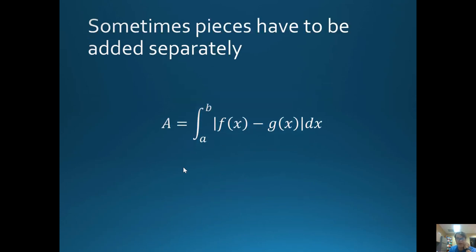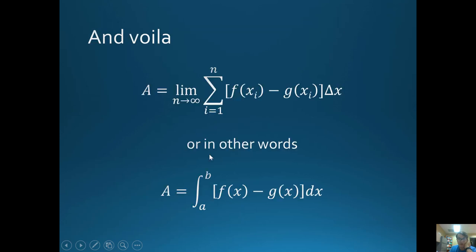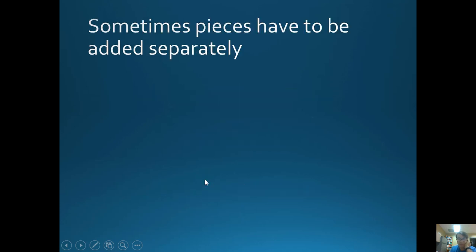Now, sometimes pieces have to be added separately. Sometimes f of x is on the top, and sometimes f of x is on the bottom. So you have to divide up the sections and add them up together. What's different is this is just a bracket, but here they've done absolute value so that you know that it doesn't matter whether g of x is on top or f of x is on top. By using absolute value, we're just saying that it's the sum of all the pieces of whichever one's on top minus whichever one's on the bottom.